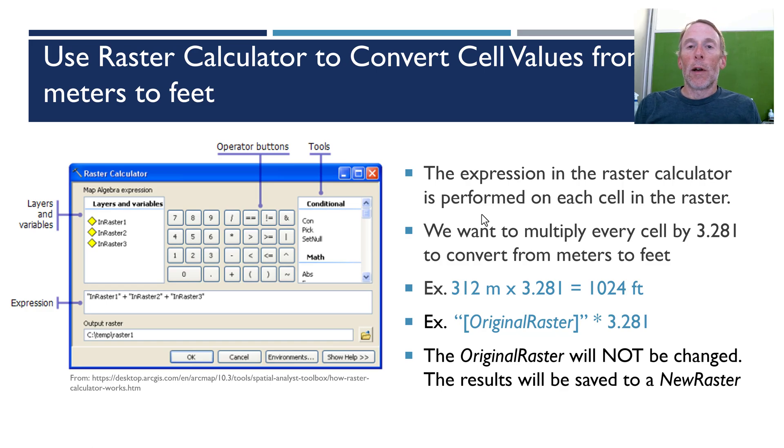So what we're going to do today to demonstrate how to use raster calculator is to convert the units of that DEM we just looked at from meters into feet. If you live in the U.S. you're probably familiar with the fact that we have to do a lot of unit conversions because we use feet and miles instead of meters and kilometers.